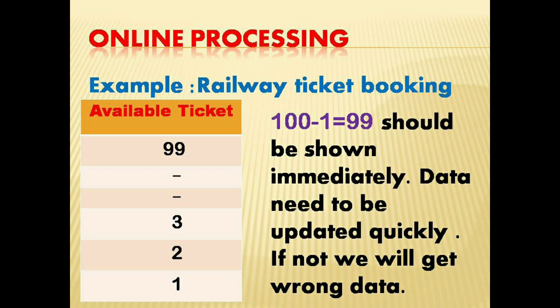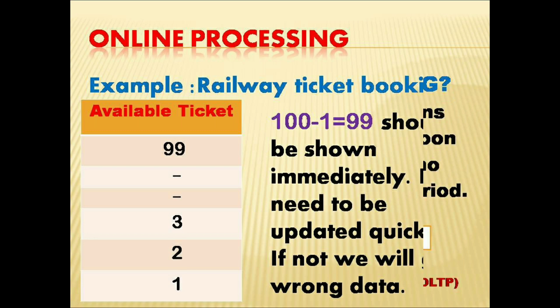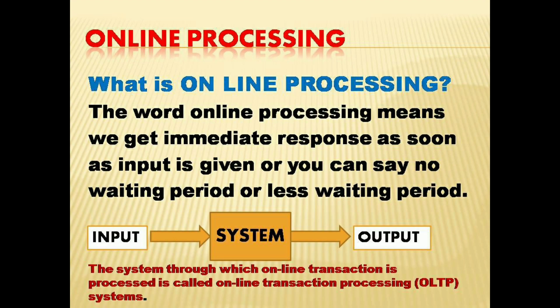Data needs to be updated quickly — if not, we will get wrong data. So as soon as a ticket is booked, it should show 99. Immediate updation is required. This leads us to the definition of online processing.